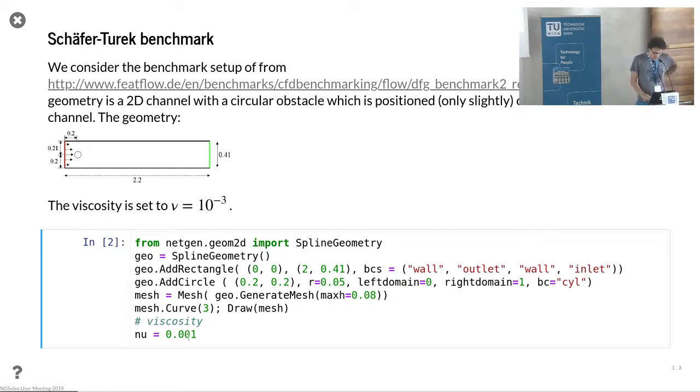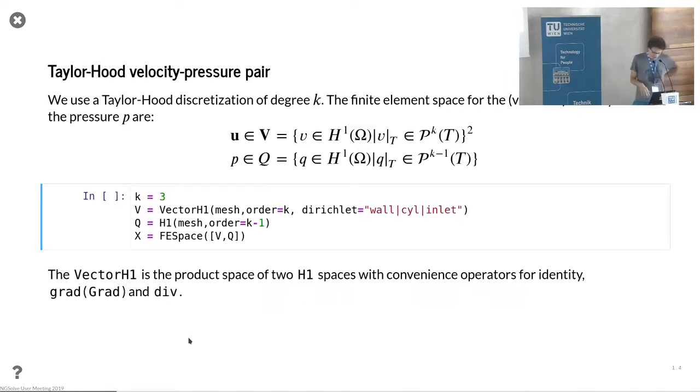We set viscosity to 10 to the minus 3, so relatively slow but still moderate. We use a Taylor-Hood discretization here, so that's something we saw before. We use order 3 vector H1, so component-wise in H1 conforming finite element space of order 3. For the pressure, one order less, and we put them together in the product space.